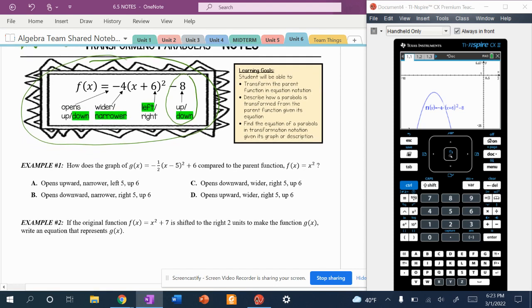So the first example says, how does the graph g(x) = -(1/2)(x - 5)² + 6 compared to the parent function f(x) = x²? Well, first thing we notice, I see a positive 6, right? So that must mean this is going up. So I'm going to look for all questions that say up. And unfortunately, all A, B, C, D choices all say up. So let's look at the next thing in line.